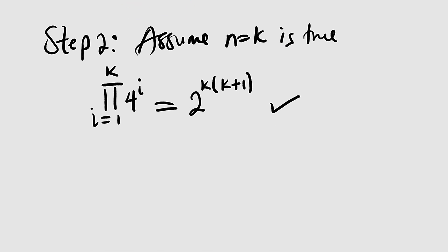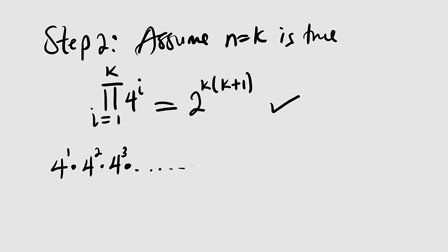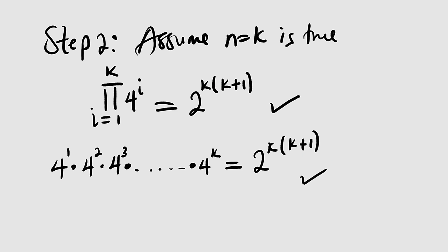So we are just assuming that this is true. The left hand side can be expanded — remember this is a product. When i is 1, we have 4 to the power of 1, multiplied by 4 to the power of 2, then 4 to the power of 3, and you keep multiplying up to the last term which is 4 to the power of k. And this equals 2 to the power of k multiplied by k plus 1.